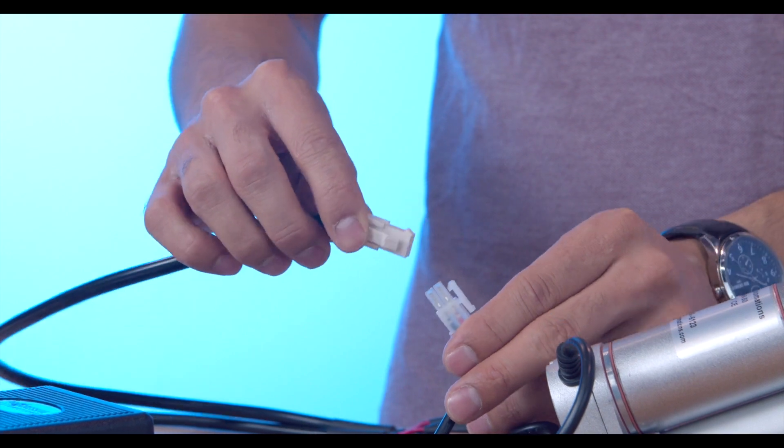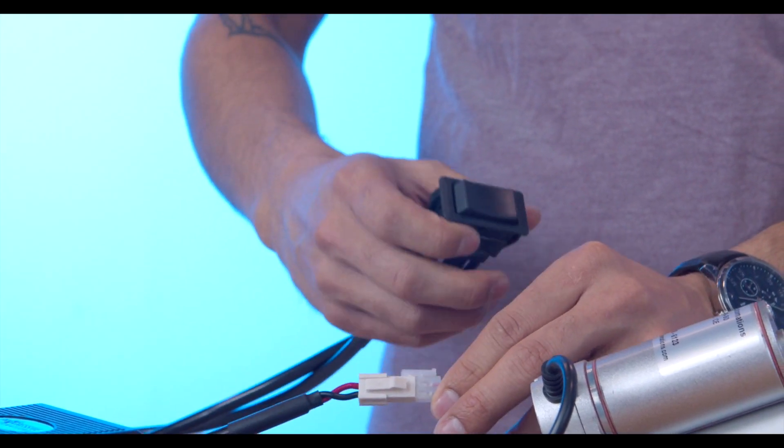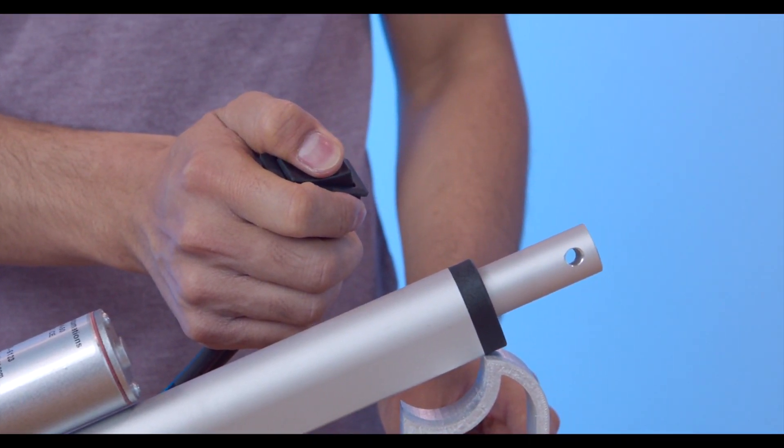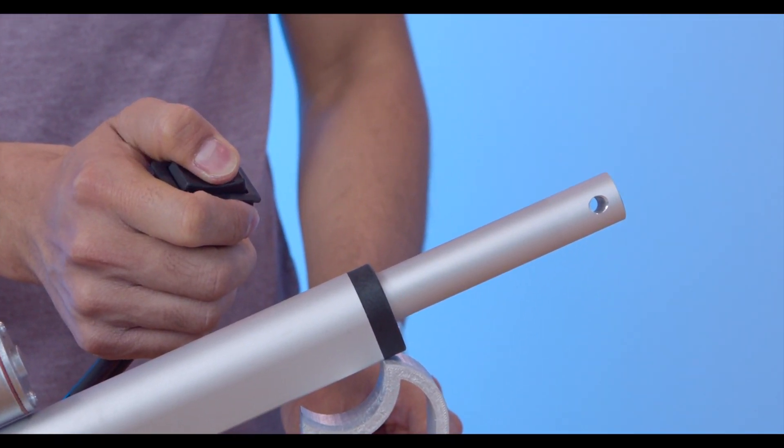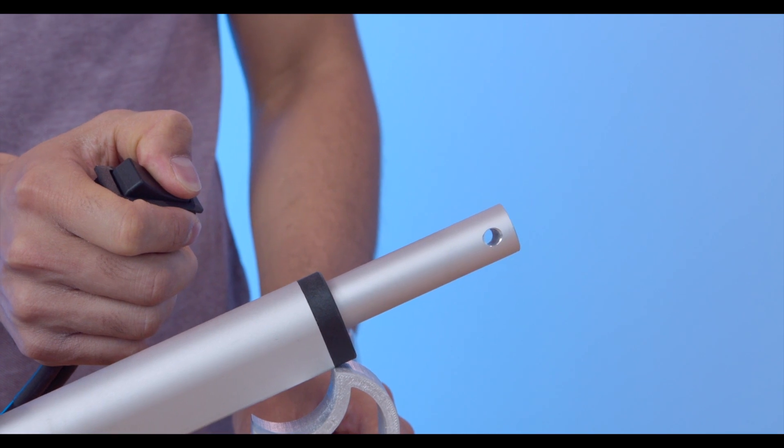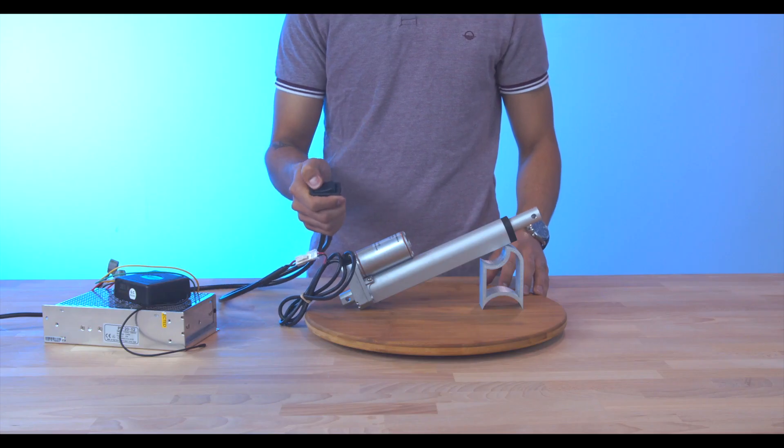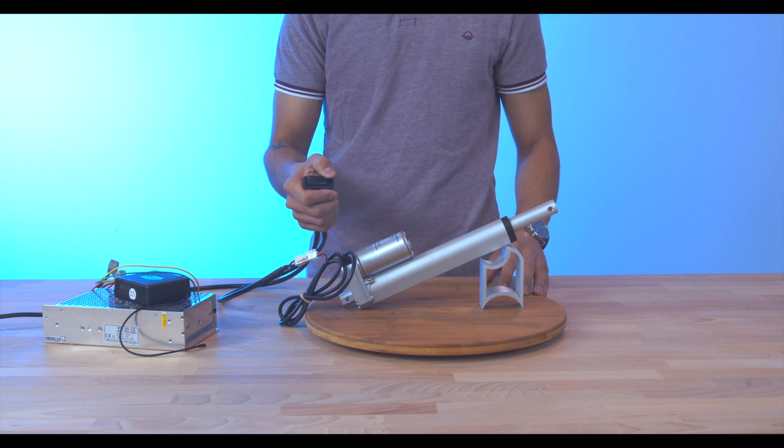Take the RC12 rocker switch, for example. This is a momentary rocker switch that comes pre-wired, making it easy to install into any application. Once both ends are connected, you can go ahead and extend and retract. As it's momentary, you have the option of pressing and letting go at the exact position where you'd like to stop the actuator.